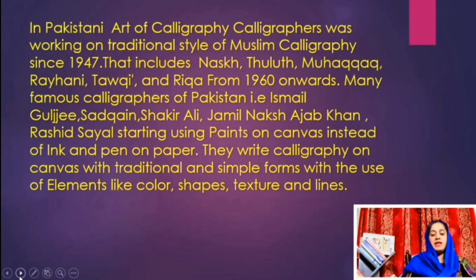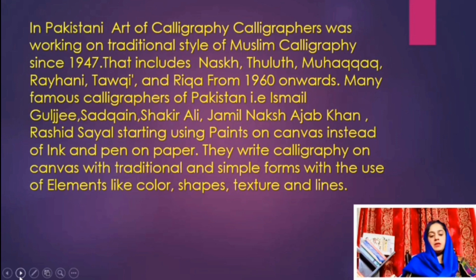In Pakistani art of calligraphy, calligraphers were working on traditional styles of Muslim calligraphy since 1947, including Naskh, Thuluth, Muraqqa, Rayhani, Tawqi, and Riqa. From 1916 onward, many famous calligraphers of Pakistan — including Ismail Gulgee, Sadequain, Shakir Ali, Jamil Naqsh, Ajab Khan, and Rashid Rana — started using paints on canvas instead of ink and pen on paper. They wrote calligraphy on canvas with traditional and simple forms using elements like color, shapes, texture, and lines.